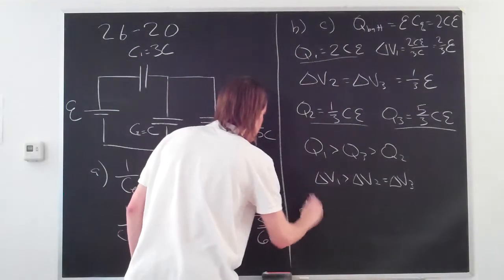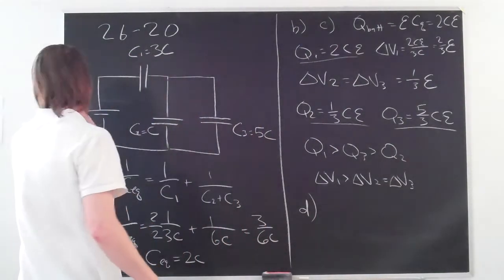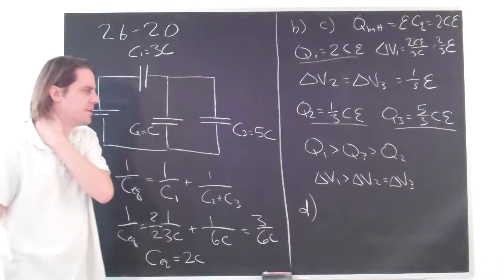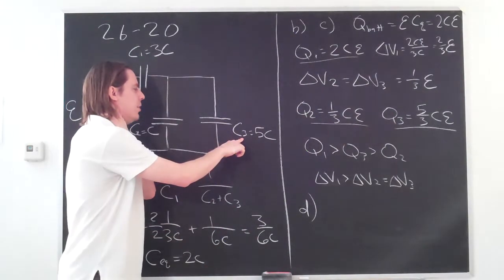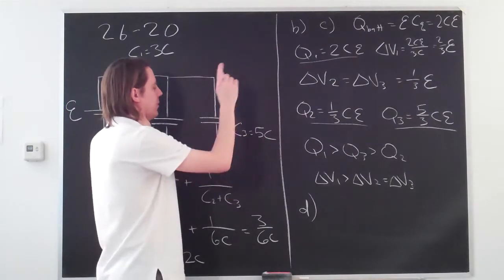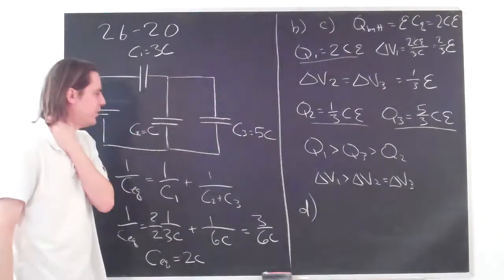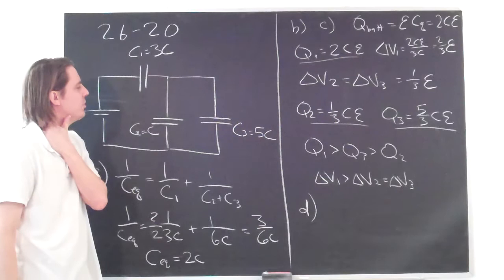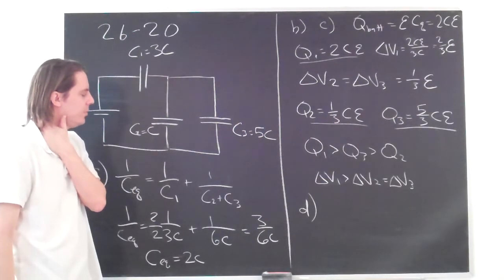And then part D. Part D, yes. So the question for part D is if C3 were to get even larger, make it 10C or 1000C or whatever. When C3 goes up, what happens to the charge on each of the other capacitors? Okay?